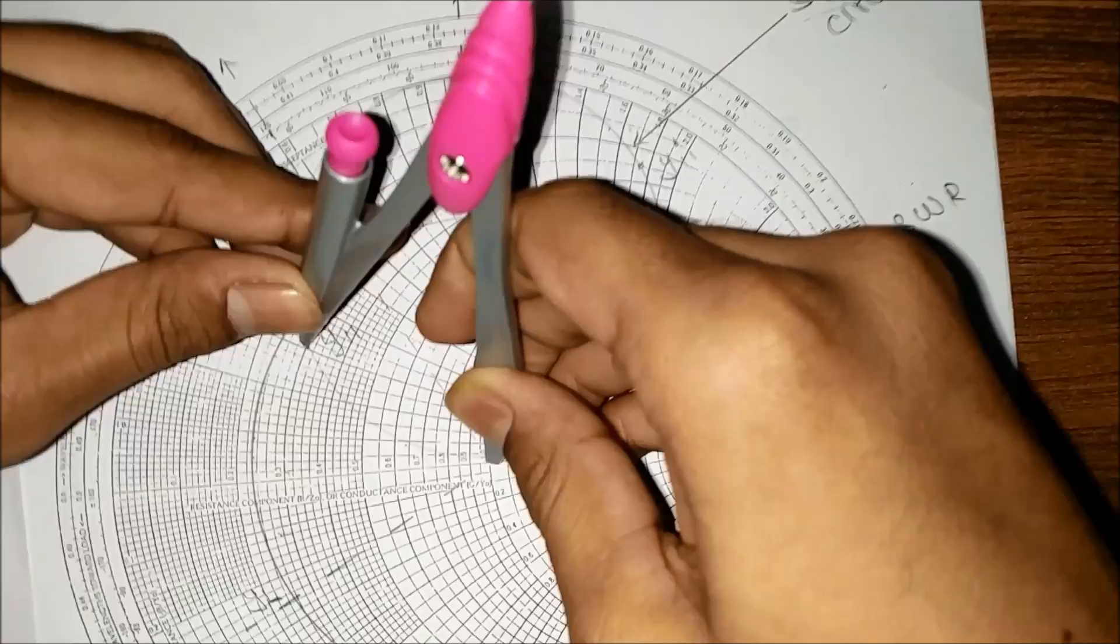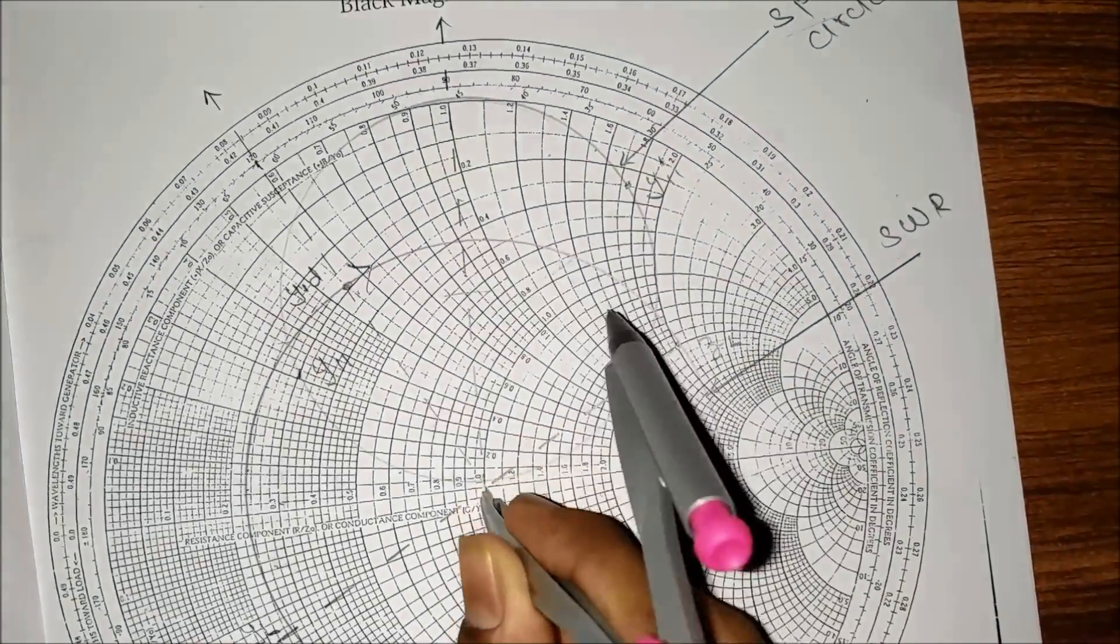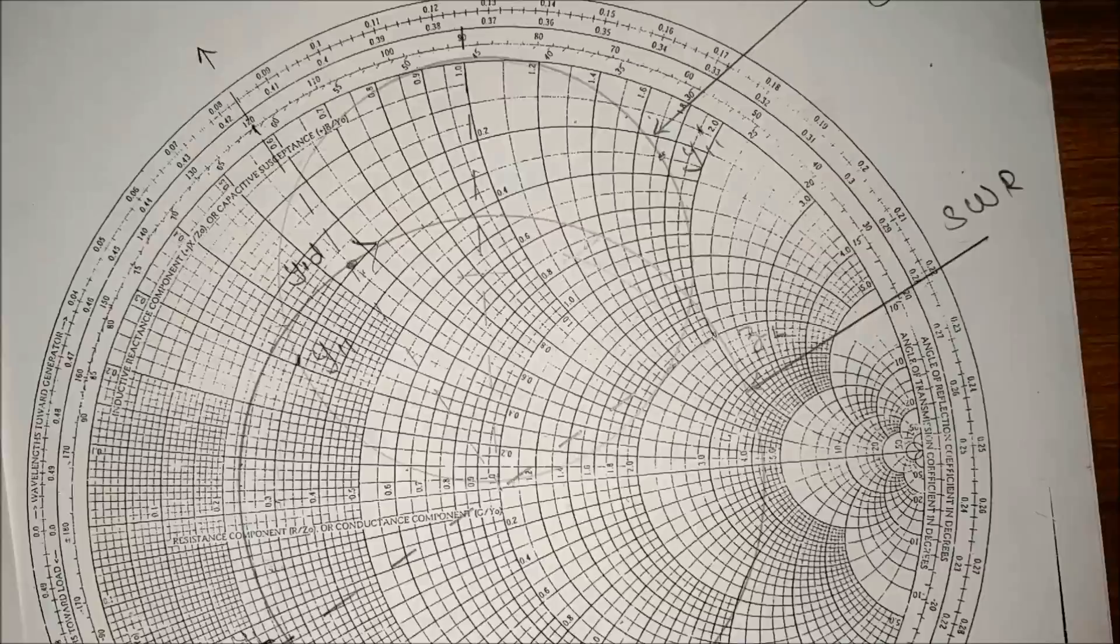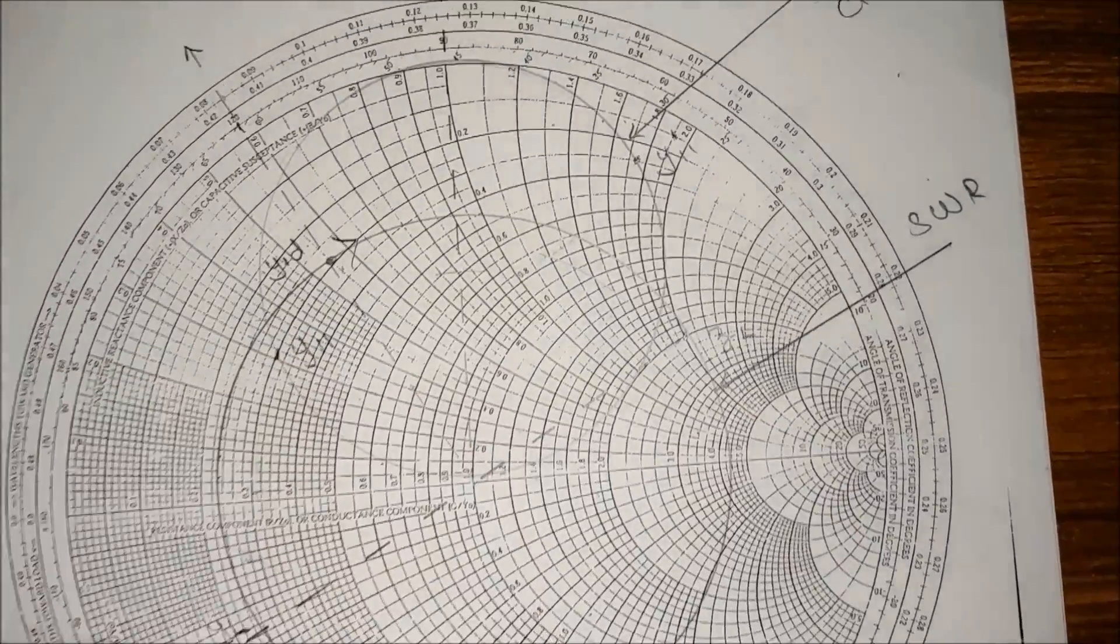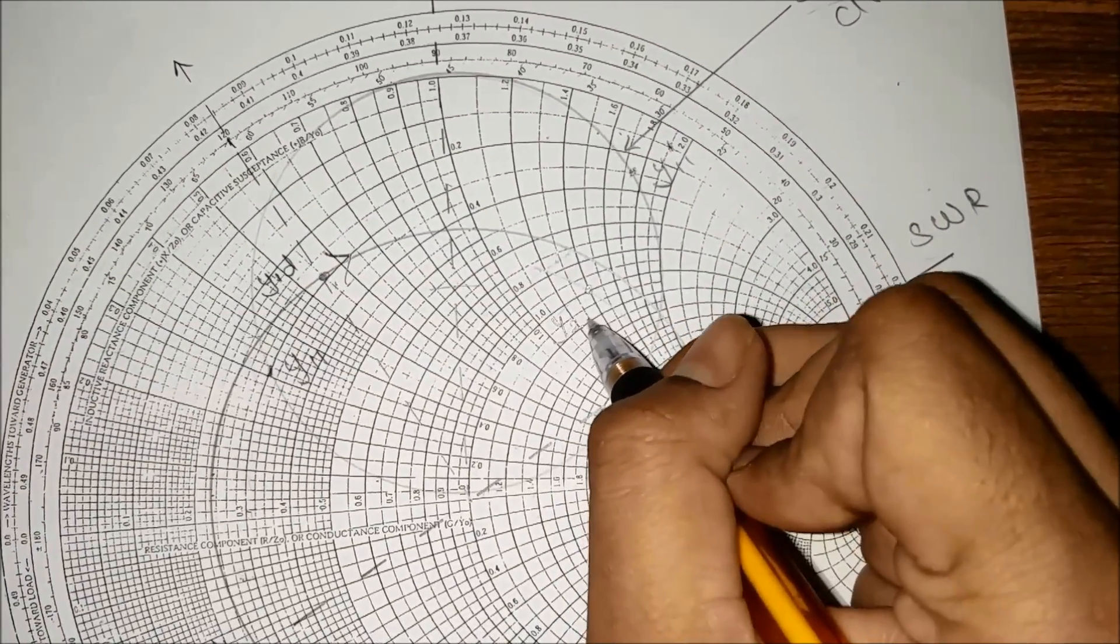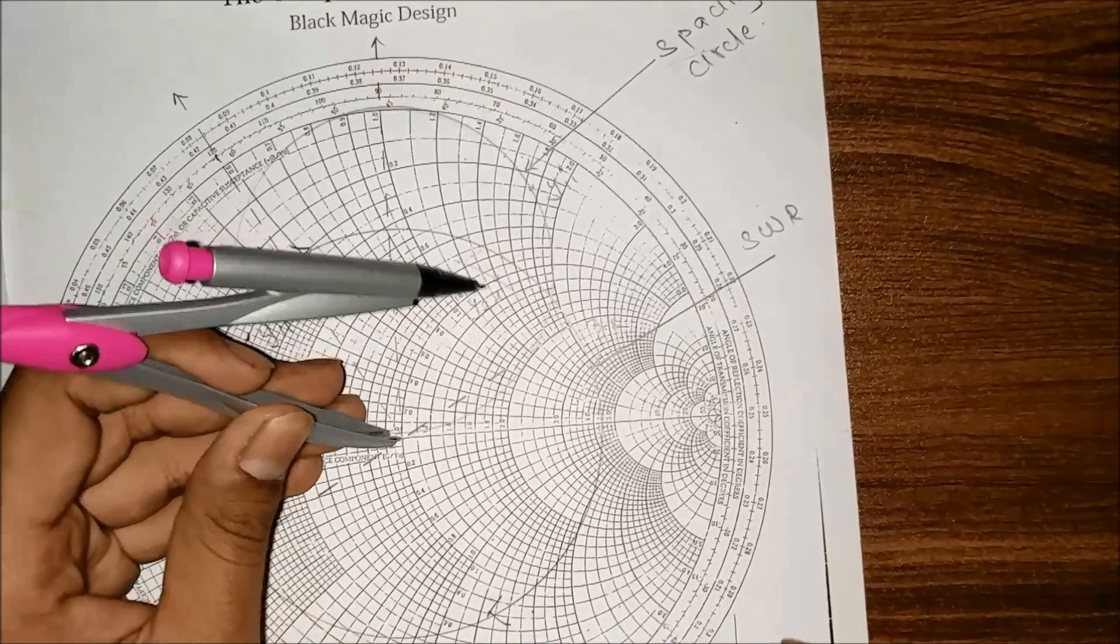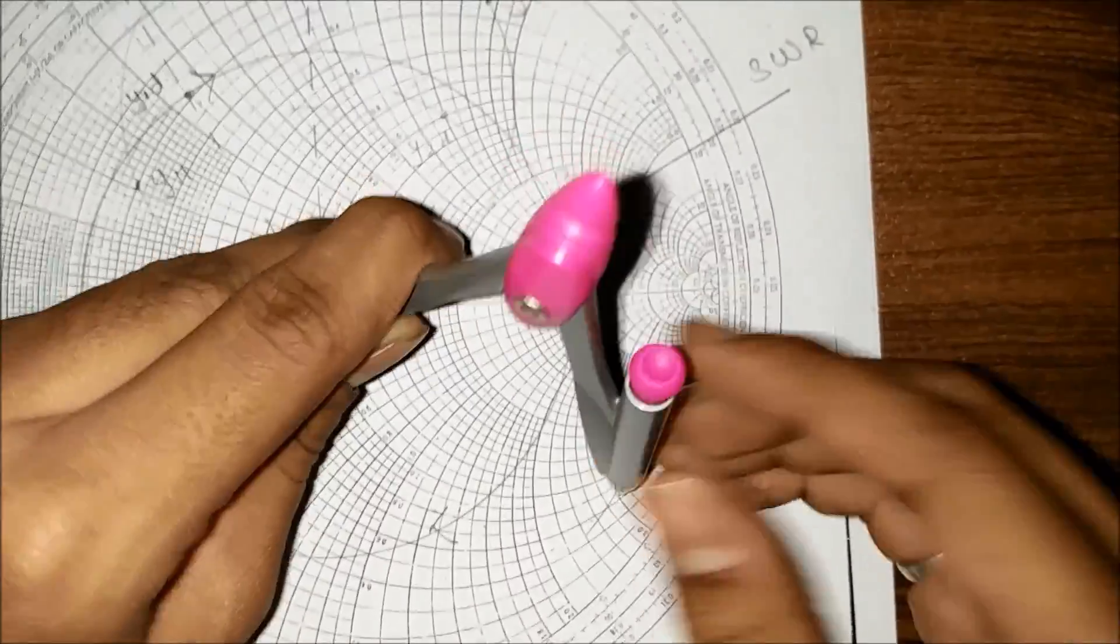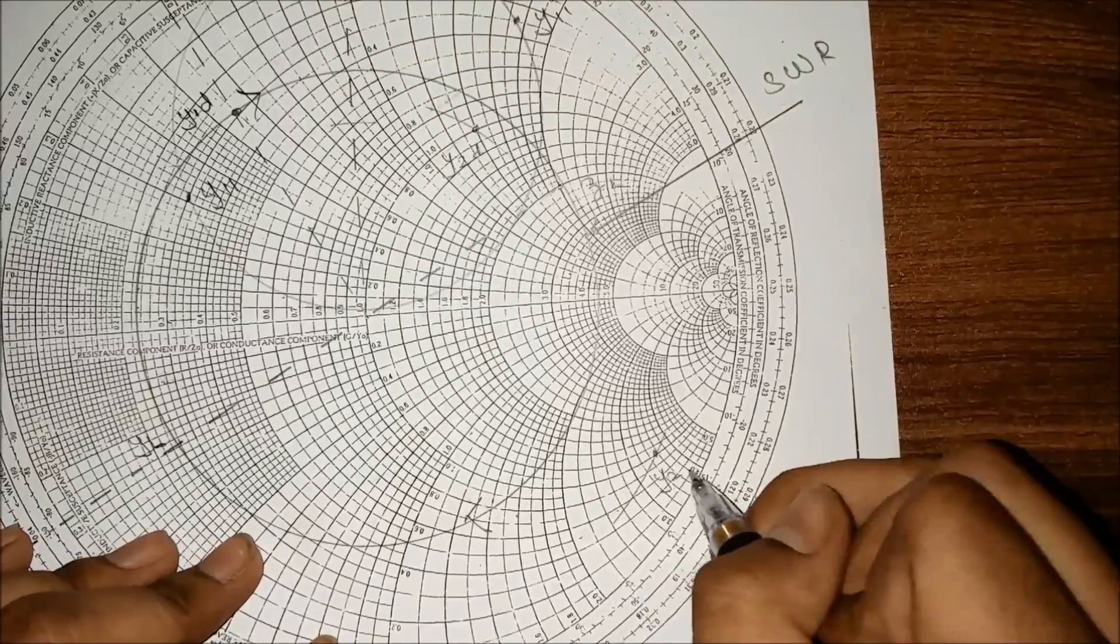Keep on y11 and move it in the clockwise direction because SWR is in clockwise, and make an arc which cuts the unit circle. This point over here on the unit circle will be y2d. We need to map y11 dash, so rotate it - it will cut somewhere over here. This point is y2d dash.